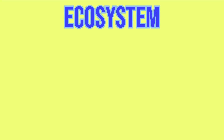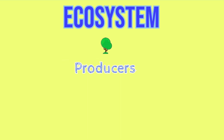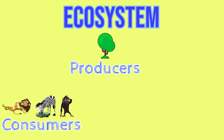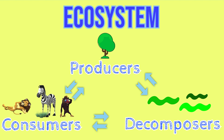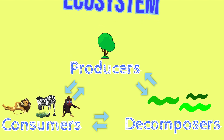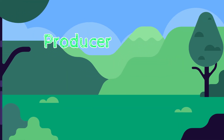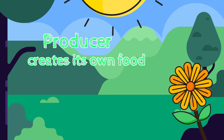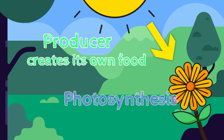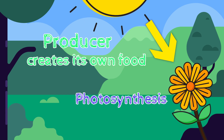In an ecosystem, you will find producers, consumers, and decomposers that are all interconnected and depend on each other to survive. A producer is a living organism that creates its own food using sunlight, such as most plants.